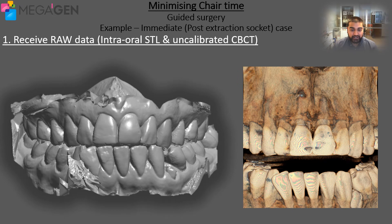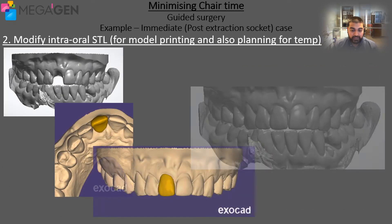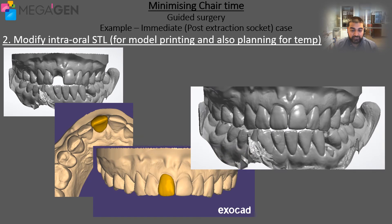The first stage of any guided surgery case is to acquire the digital information needed to proceed. The two pieces of information we need to acquire are the intraoral scan — or an impression which will then be cast into a stone model — and the CBCT information. Once we have the intraoral scan or the stone model, we can begin to process this information so that we can extract teeth if needed and modify the STL to suit our needs.